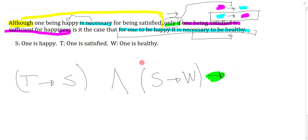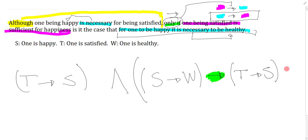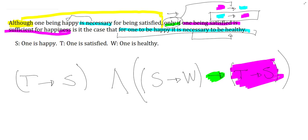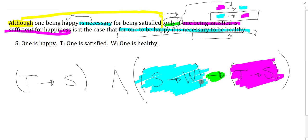To preserve 'and' as the main connective I open a big bracket, then do the purple side: 'one being satisfied is sufficient for happiness' — the sufficient condition is being satisfied, so satisfied → happy (T → S). Close the bracket. The full sentence is: (T → S) ∧ [(S → H) → (T → S)]. Breaking it down around the main connective makes this approachable — you just keep asking what's the antecedent and what's the consequent, and the problem solves itself.